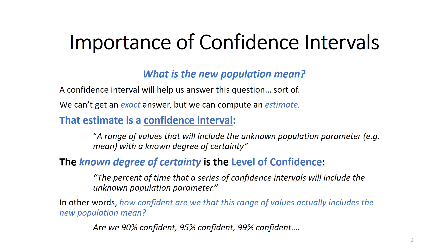If it's no longer 200, what is it? The estimate we're going to compute is known as a confidence interval. A confidence interval, as defined, is a range of values that will include the unknown population parameter with a known degree of certainty. It's not going to give us a specific answer about what the new population mean is. Instead, it's going to give us a range — a low value and a high value — and somewhere in there we hope to include the unknown population parameter.